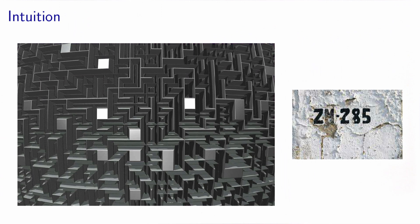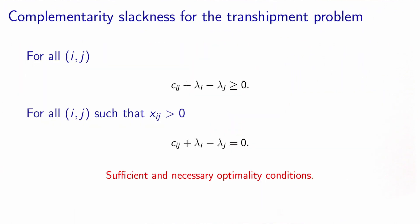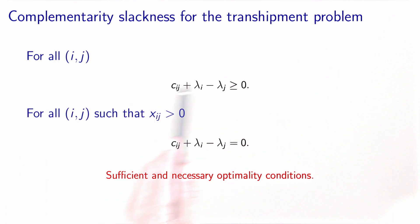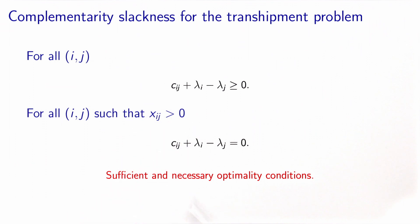These labels happen to be the dual variables associated with the flow conservation constraints of the transshipment problem. In the general context of the transshipment problem, we identified the complementarity slackness conditions to be sufficient and necessary for optimality. This condition says that for all arcs in the network, this inequality must be verified, and for all arcs carrying some flow, it must be verified as an equality. In the context of the shortest path problem, an arc carrying a flow is an arc that belongs to the shortest path. Therefore, we can translate this complementarity slackness condition directly as an optimality condition for the shortest path problem.